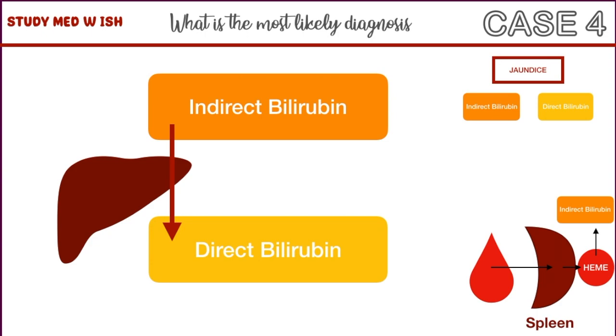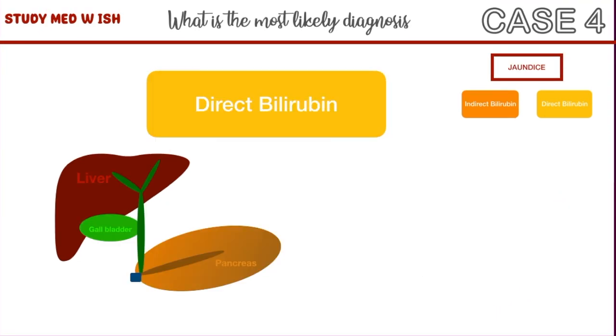We'll speak about all that in a separate video. But in this case, our patient has high levels of direct bilirubin, so let's find out what the potential causes are. To understand this, let's quickly go through the anatomy.